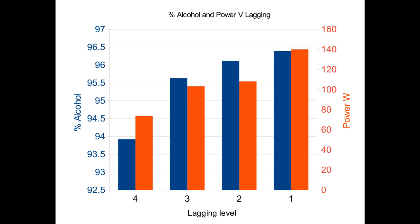During the course of this experiment the ambient temperature in the distillery ranged from about 9 to about 14 degrees centigrade. The results given in my video on column control were obtained using level 1 lagging, which you can tell from the high proof and relatively high power settings given there. This was a serendipitous observation because of the relationship between proof and night versus day distillation.